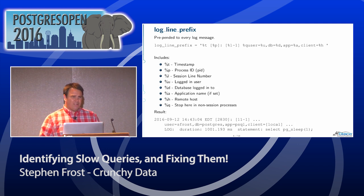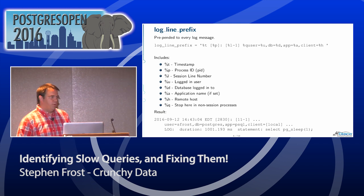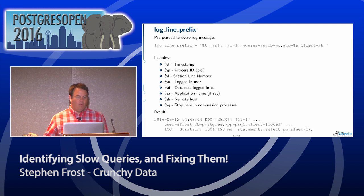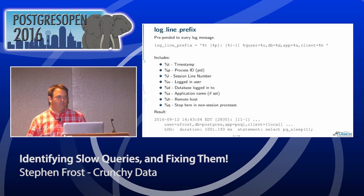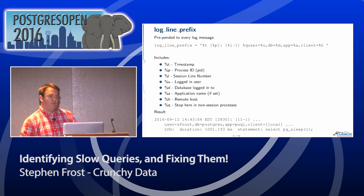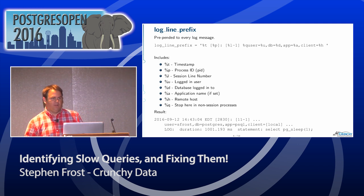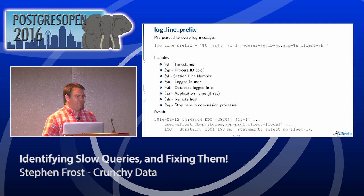The next thing is that we need a log line prefix, especially if you're using the built-in Postgres logging. This is the one I like to use — it's essentially ripped from exactly what pgBadger is looking for by default, which I find to be a really good log line prefix, although you can customize it. pgBadger allows you to configure it so it knows what kind of log line prefix you have.